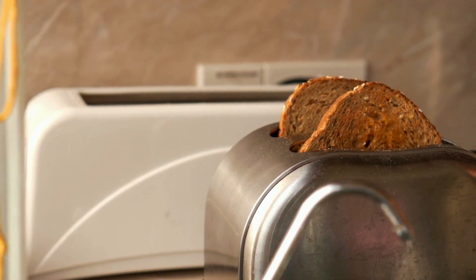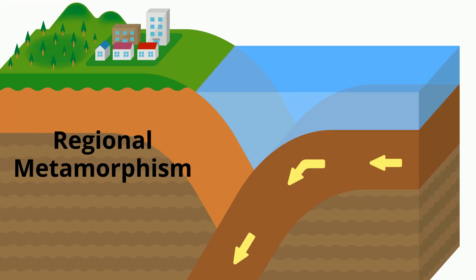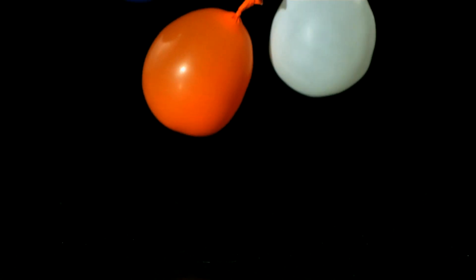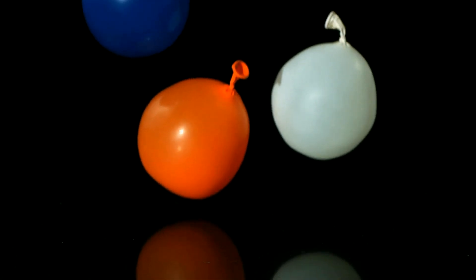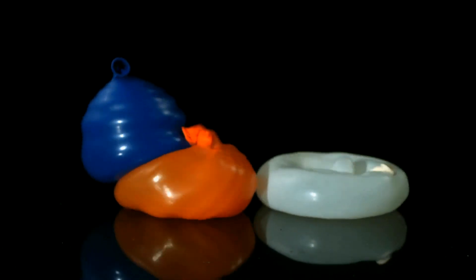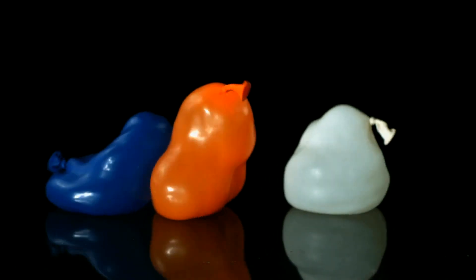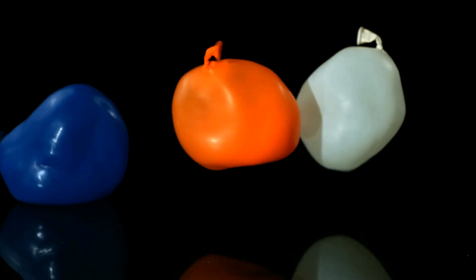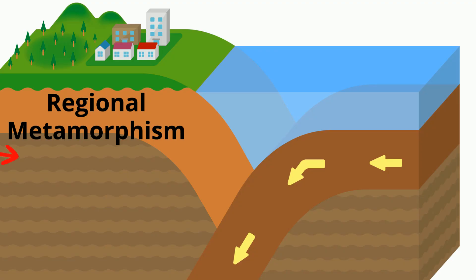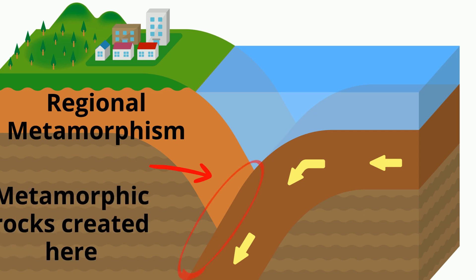Regional metamorphism is caused by extreme pressure. The pressure presses and squeezes the rock and transforms it into something new — kind of like gravity acting on a balloon and transforming its shape. This often occurs at convergent plate boundaries, where existing rocks are transferred into new rock.